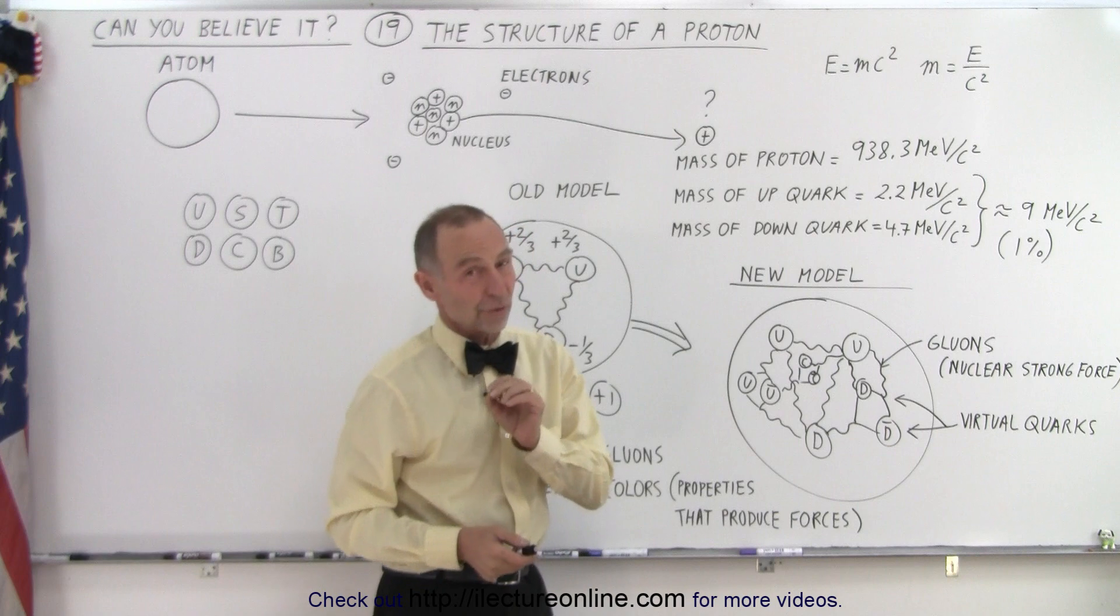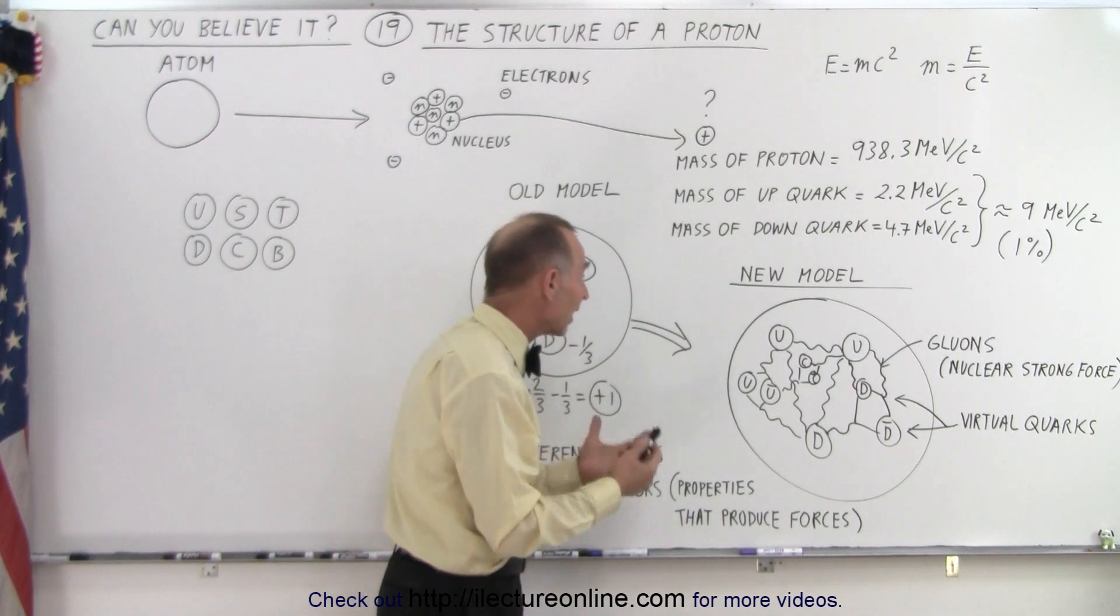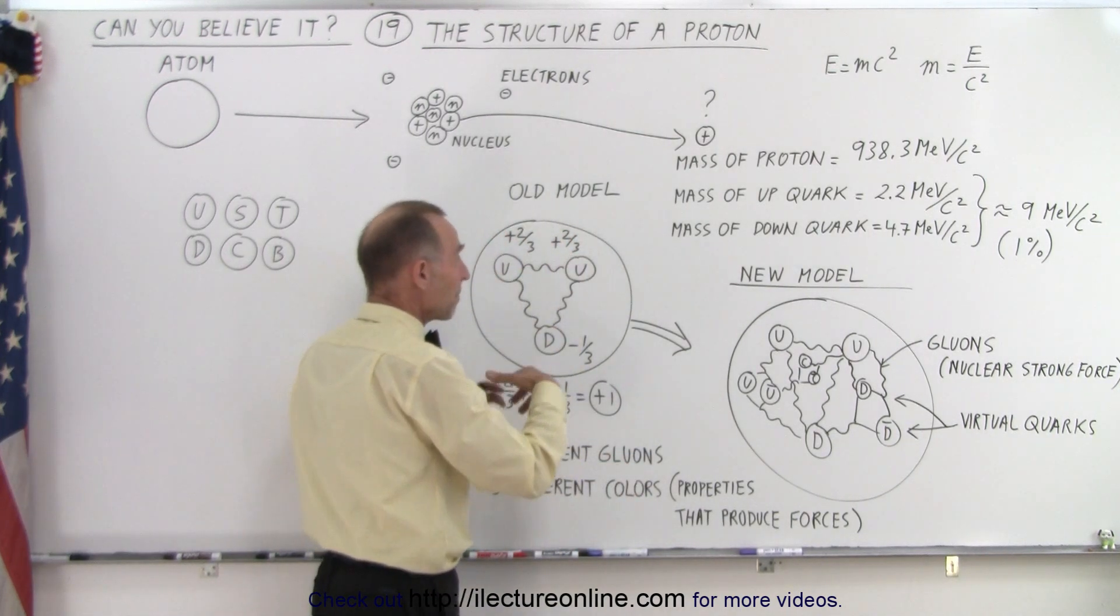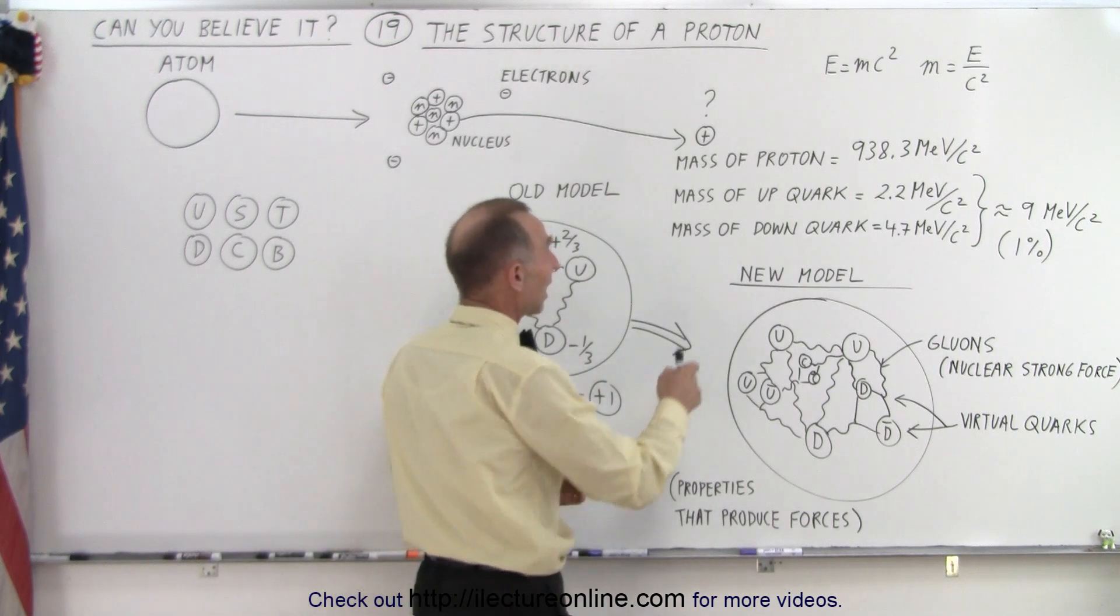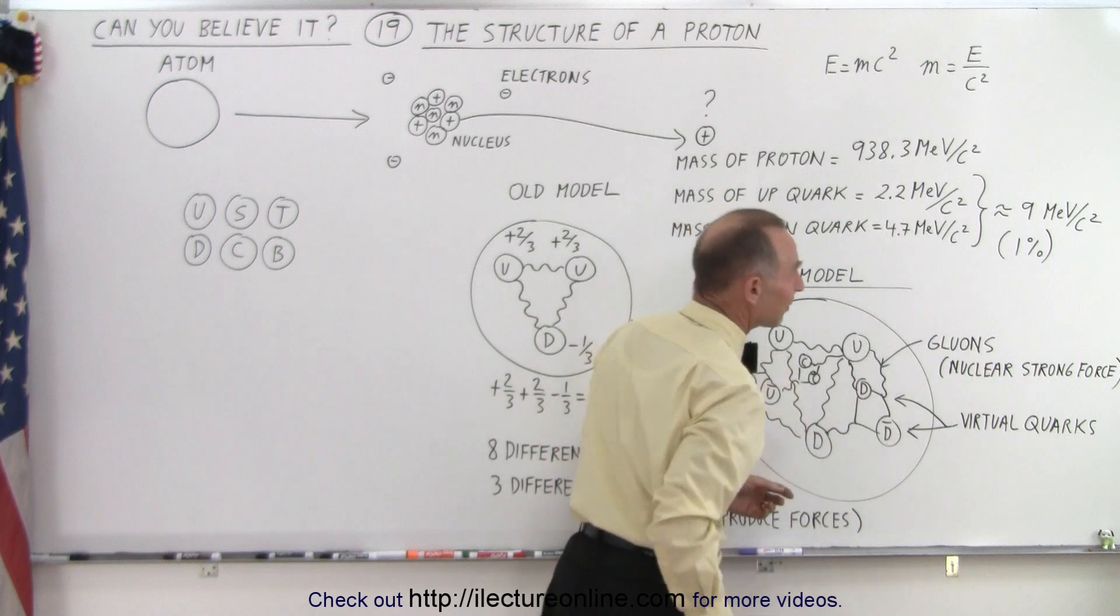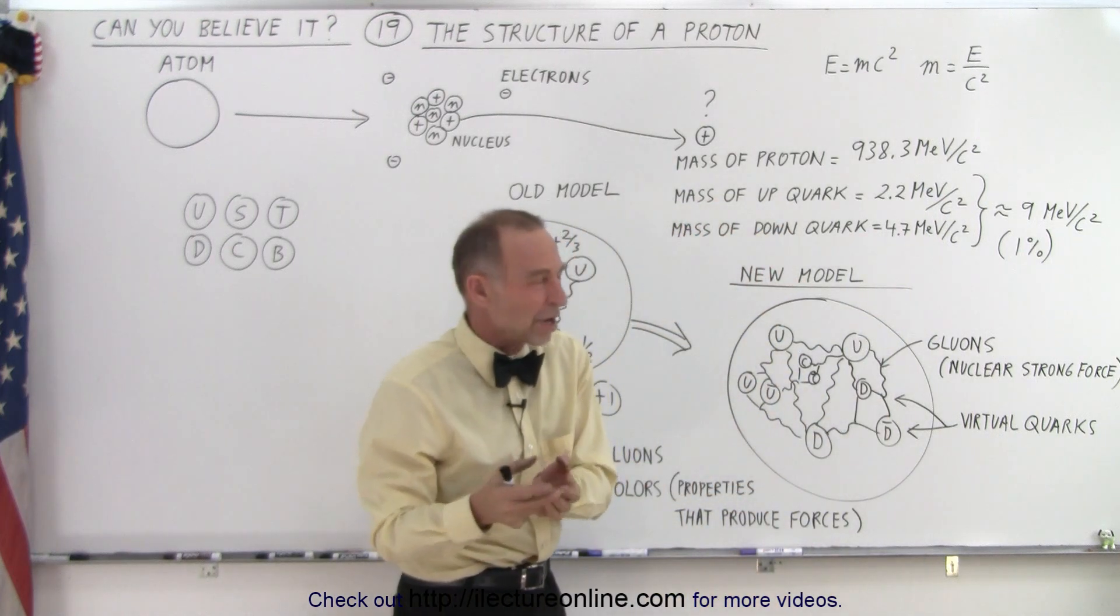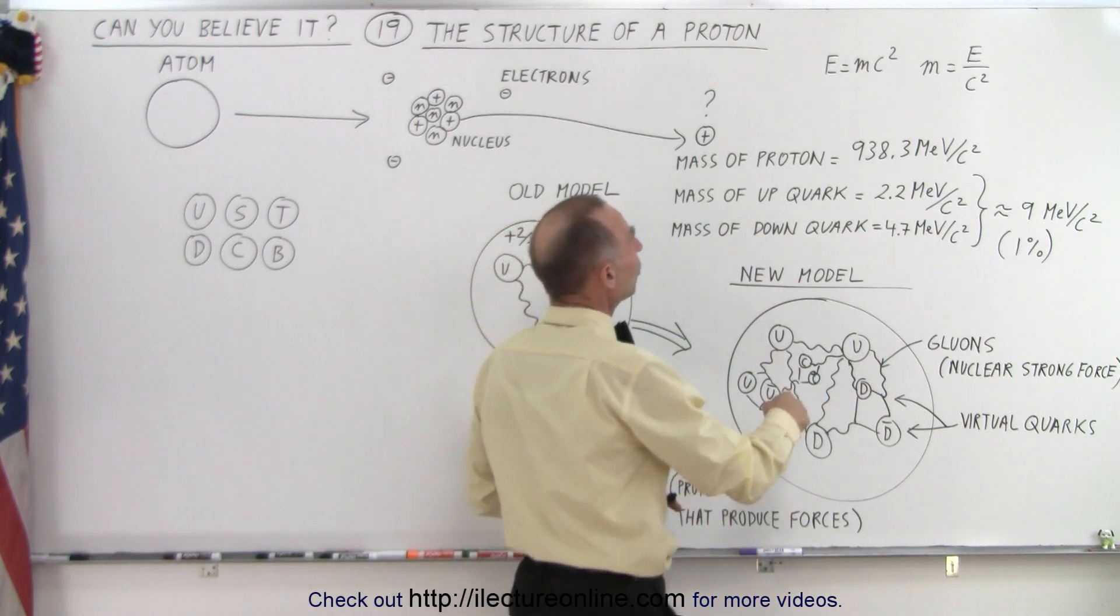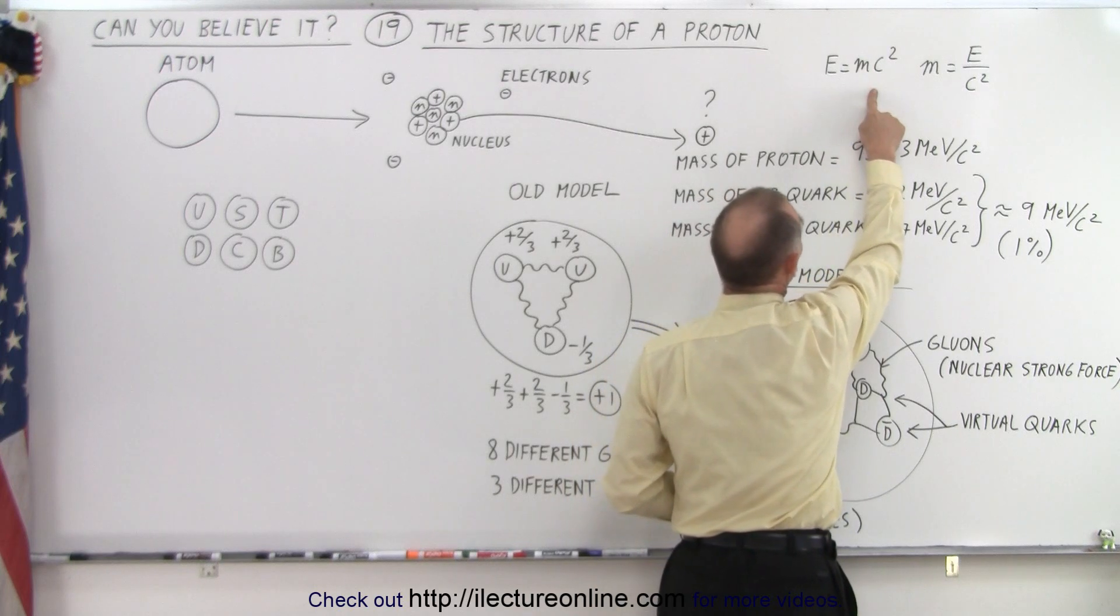another very strange thing about protons is that if we add up the masses of the quarks that make up a proton, notice we have an up quark at a mass of 2.2 million electron volts divided by C squared. That's kind of a strange unit for mass. But notice, since we have E equals MC squared,